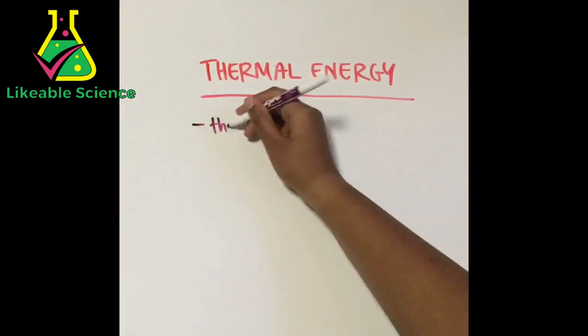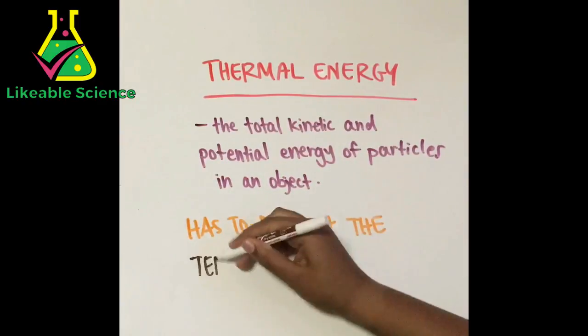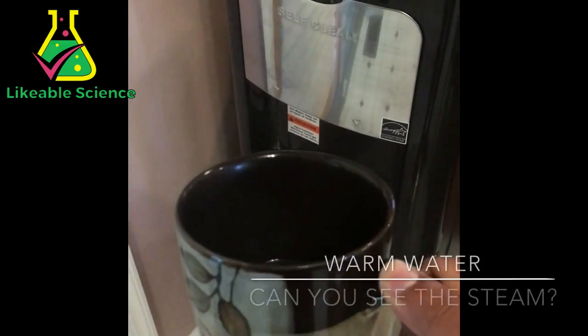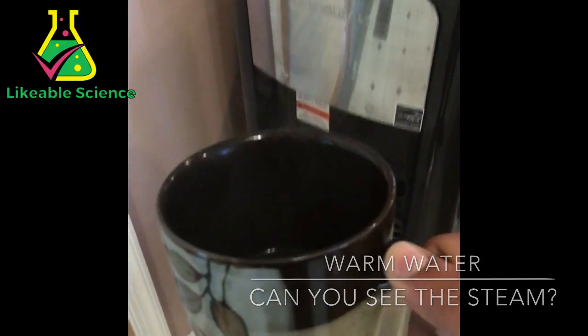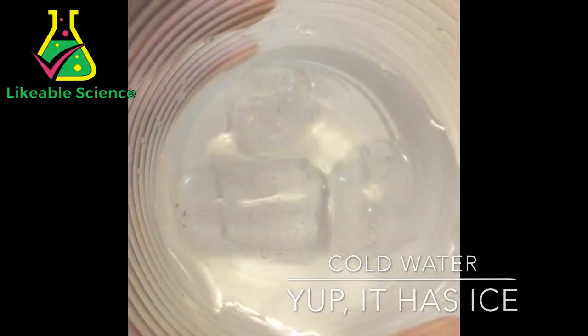Thermal energy is the total kinetic and potential energy of the particles in an object. In simple terms, it just has to do with the temperature of an object. A warmer substance will have more thermal energy because its particles move faster and a colder substance will have less thermal energy because its particles move slower.